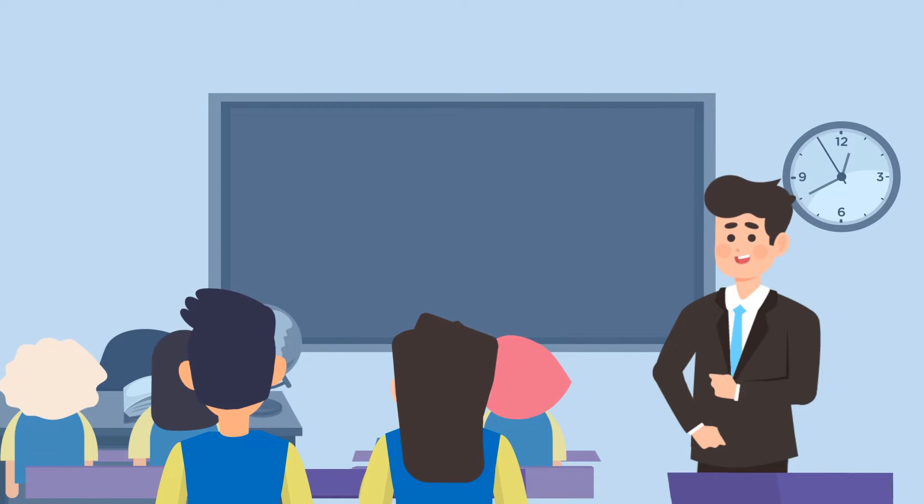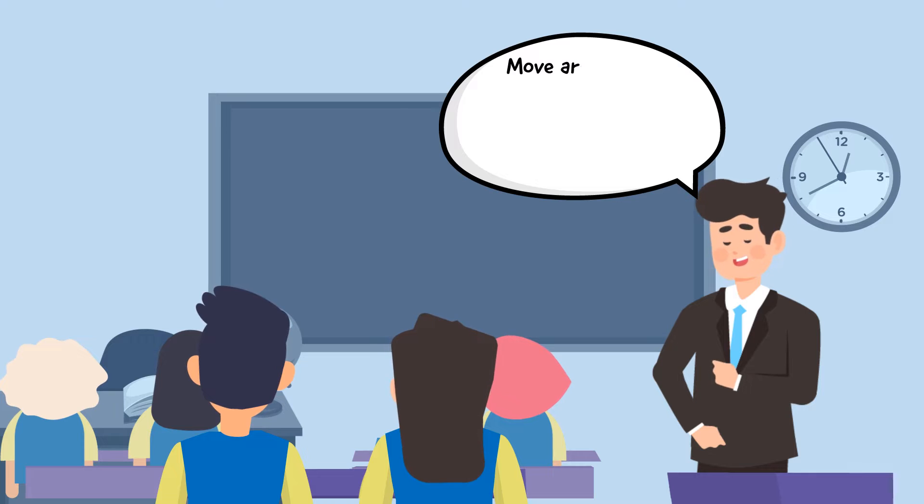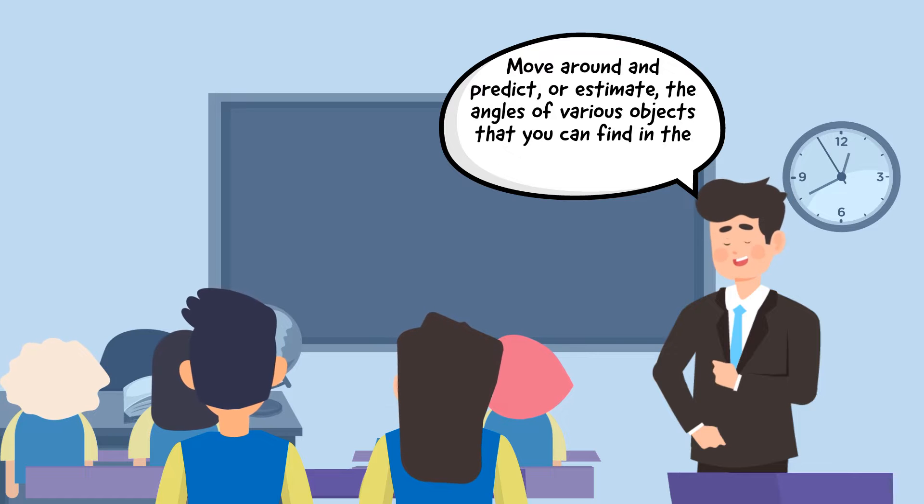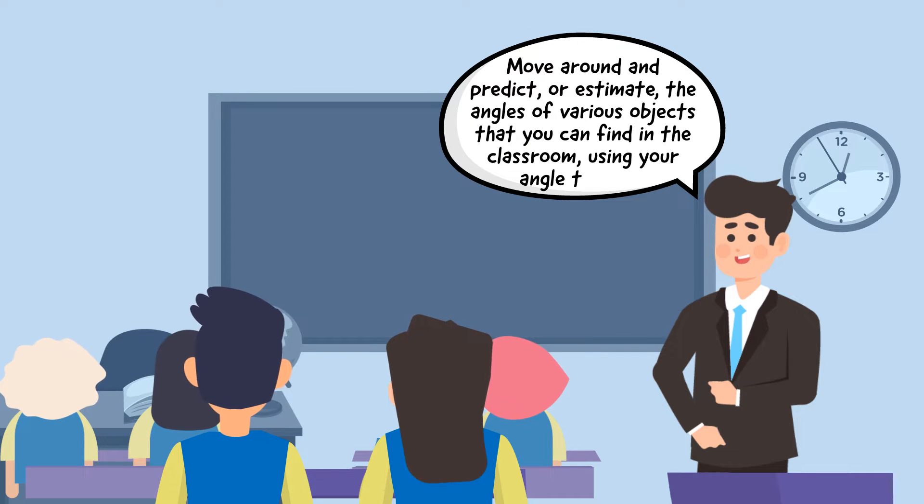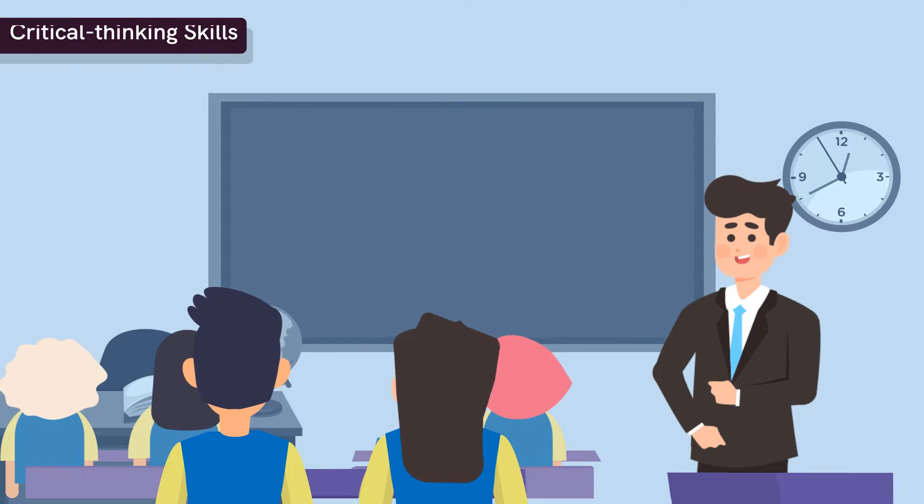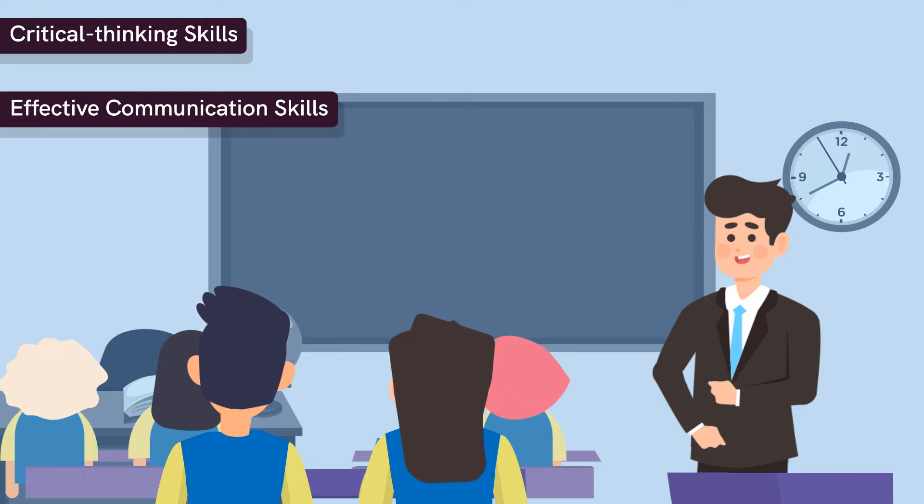Let's begin by asking the three groups to move around and predict or estimate the angles of various objects that they can find in the classroom using their angle testers. This activity will further aid in developing the students' critical thinking and effective communication skills.